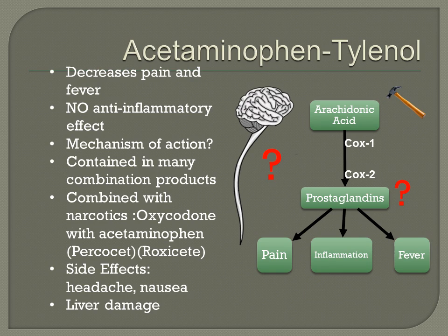Acetaminophen, or the brand name Tylenol, decreases pain and fever but does not have an anti-inflammatory effect. The exact mechanism of action of acetaminophen is unknown — there are many different theories. It may reduce the production of prostaglandins in the brain, or it may be more centrally acting in the central nervous system. Acetaminophen is contained in many combination products such as cold medications, so it's important to read the labels of OTC meds.